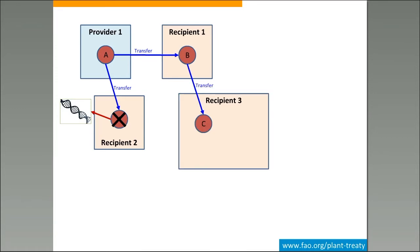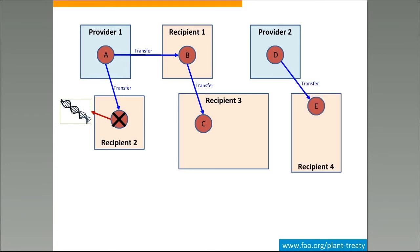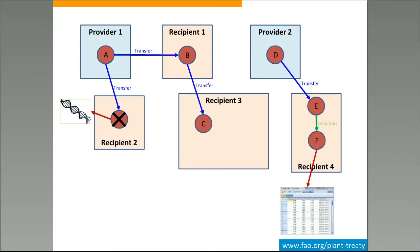Recipient 1 transfers material B to recipient 3, and a new DOI C is assigned. Separately, a new provider has material D that is transferred to recipient 4, who gets a new DOI called E. Recipient 4 performs a process of selection, obtaining a new material to which a new DOI F is assigned. On this material, the recipient publishes a dataset. Then this new material F is transferred back to recipient 3, who gets a new DOI called G.